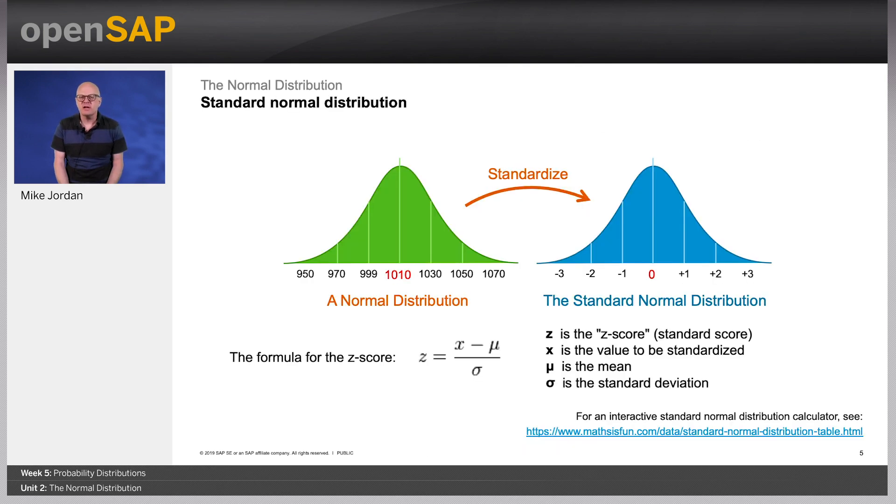To convert a value to a standard z-score, subtract the mean and divide by the standard deviation. This is called standardizing, and the formula is shown on the slide.